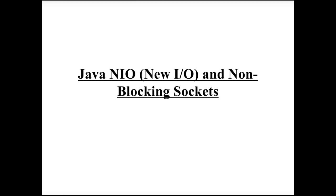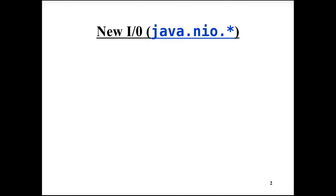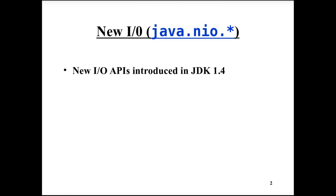NIO means New IO and is a Java API in part replacing, in part completing the older Java IO stream-based API. The Java NIO API stays in packages starting with java.nio. It was introduced in JDK 1.4 and improved in JDK 1.7, but the parts covered in this course are more or less the same in 1.4 and 1.7.